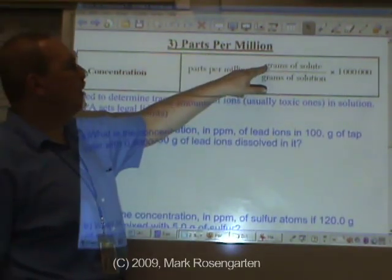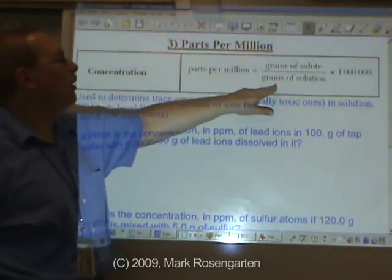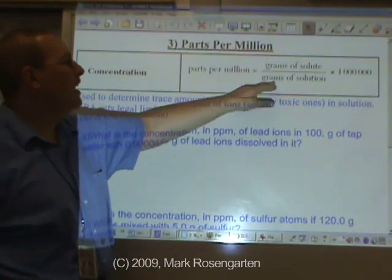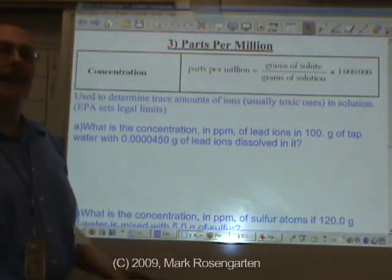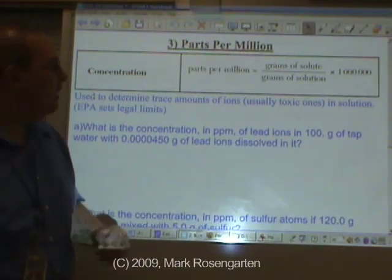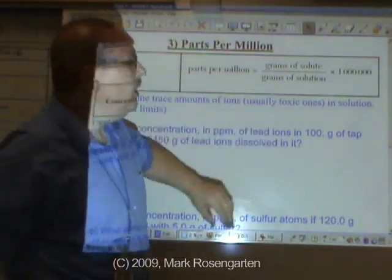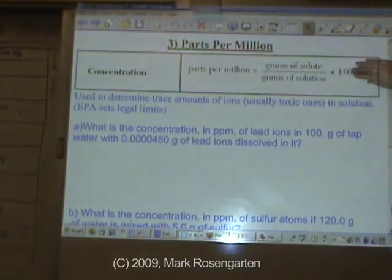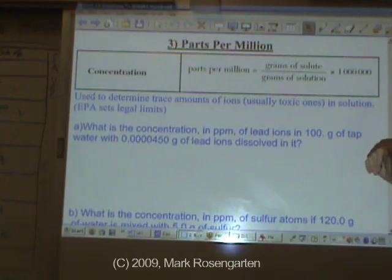And it's the number of grams of solute there are per gram of solution times a million. This is kind of like percent. Percent is part over whole, but in percent, you multiply by 100. Well, this is parts per million, so we multiply by a million. Again, this is on reference table T.